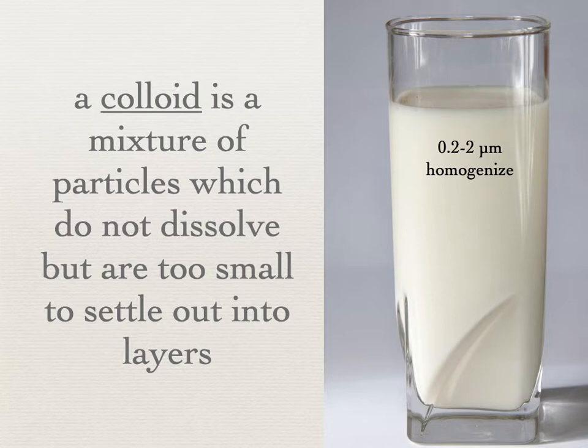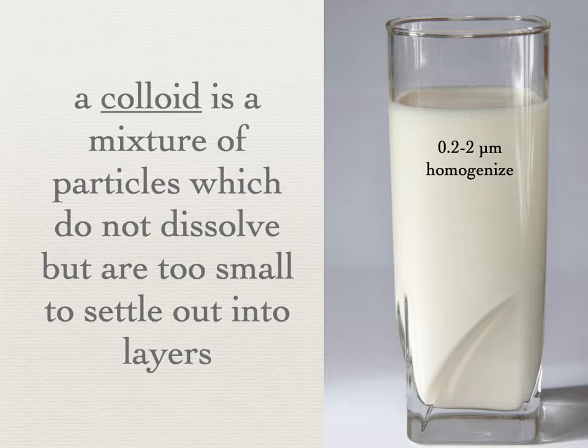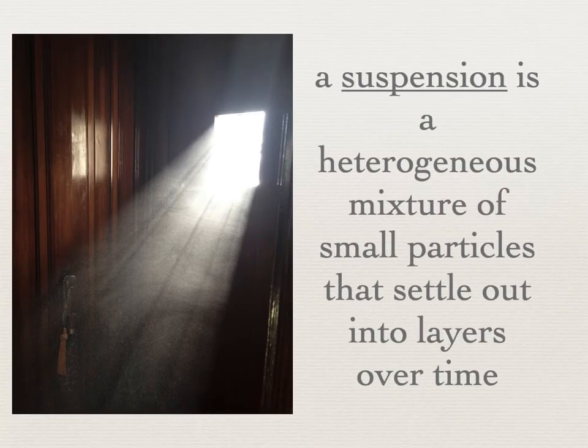The homogenization actually breaks down when milk sours. Anyone who's seen a carton of sour milk that's gone way bad knows that the fat particles tend to clump together, settle to the bottom, and you get chunky milk. At that point you no longer have a colloid, which leads us to our next type of mixture: a suspension.